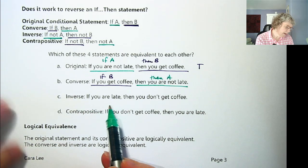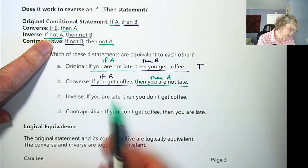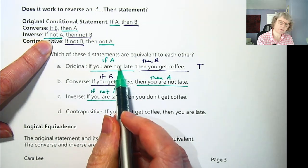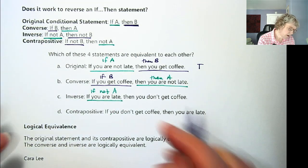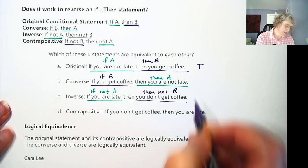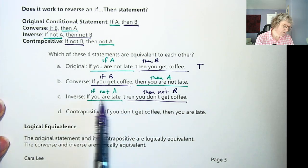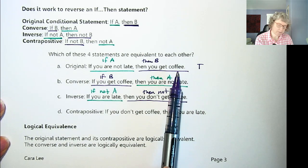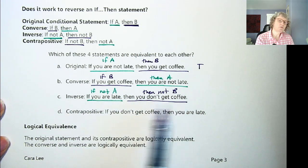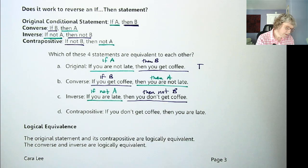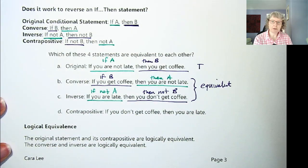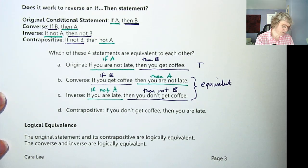Now let's look at the inverse. The inverse is if not A — so if you are late, because the original had 'not late' — then not B, then you don't get coffee. So: if you are late, then you don't get coffee. The original said if you're not late, you do get coffee. But if you are late, maybe you brought your coffee with you. So the converse and the inverse are actually equivalent to each other and have the same truth value.